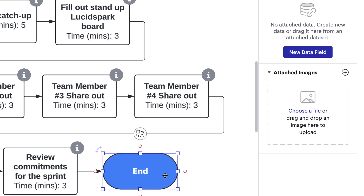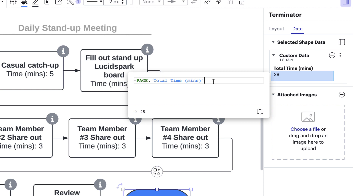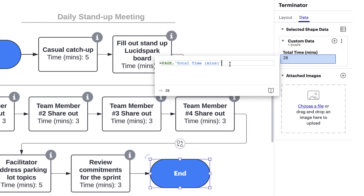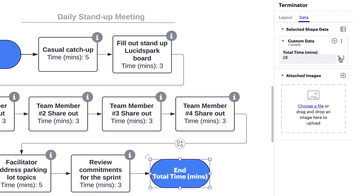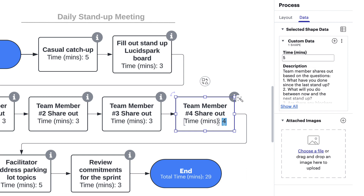We'll add a custom data property and call it "total time." In our custom data field, we'll type another formula — this means that Lucid is going to read the page data we just entered and pull that value. If we go back to our terminator shape, we can hit the plus T button and add the label and the value. We can format it how we like. And now if any of the time data changes in any of the process shapes, the total time will also adjust because the formula is automatically totaling that data for us.